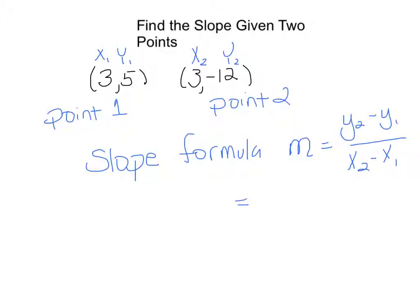Now, y₂ we're going to put in as negative 12, y₁ is 5. Now be very careful here because if y₁ was a negative, you'd want to go ahead and put this in parenthesis so that you could really see that there was going to be a sign change there. Since it's positive, I can if I want to or I don't have to. Now x₂ is 3 and then x₁ is 3.